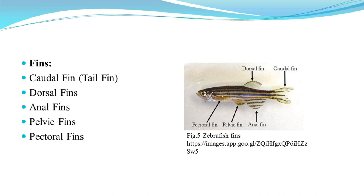The dorsal fin is located along the midline of the zebrafish and acts as a stabilizer during swimming. The anal fin is on the ventral side, posterior to the anus, similar to the dorsal fin, providing stabilization. The pelvic fins are paired ventral fins located behind the pectoral fins and help during swimming. The pectoral fins are located on the sides just behind the gills and play an important role in steering, braking, hovering, and maintaining position — they are highly flexible.